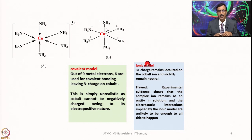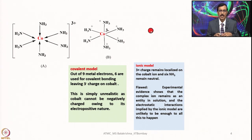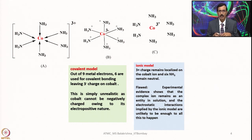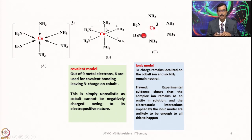That means if you just consider cobalt 3+ as a separate entity and put it into solution, it would disintegrate. As a result, the ionic model was also overruled. The ionic model makes the compound appear like a double salt that would disintegrate in solution. Since that is not the case, this model is also overruled.